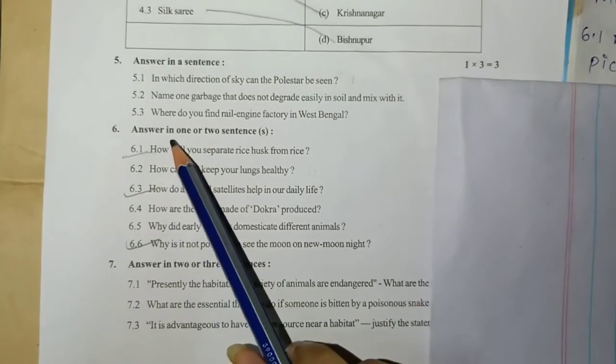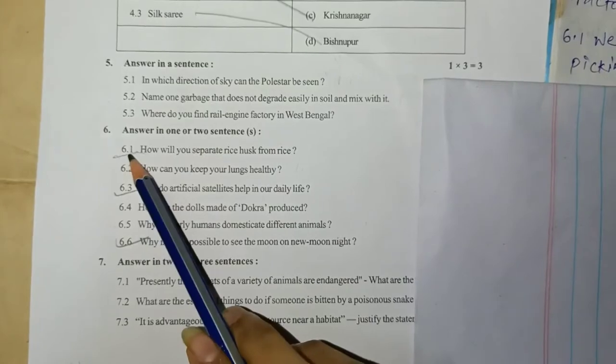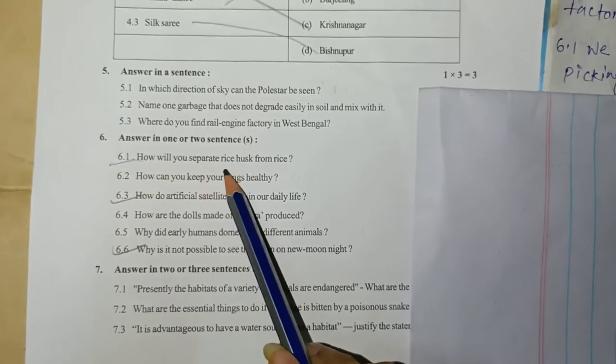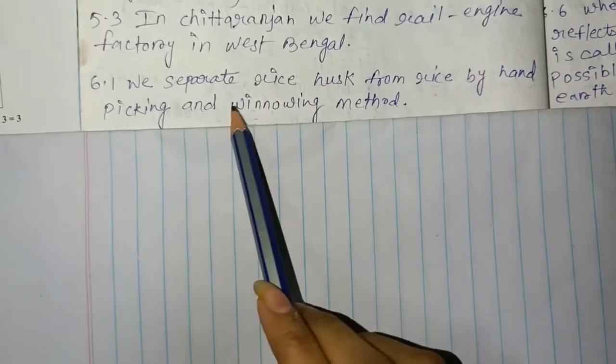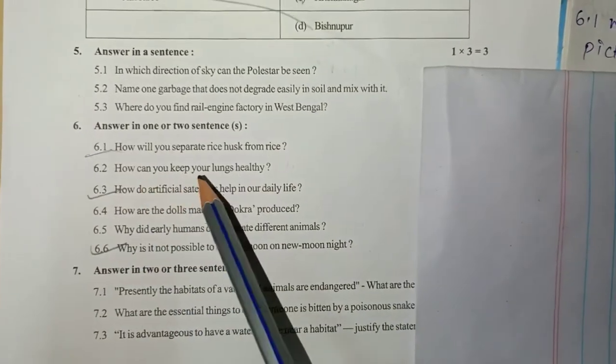Answer in one or two sentences. 6.1: How will you separate rice husks from rice? We separate rice husks from rice by hand picking and winnowing method. 6.2: How can you keep your lungs healthy?